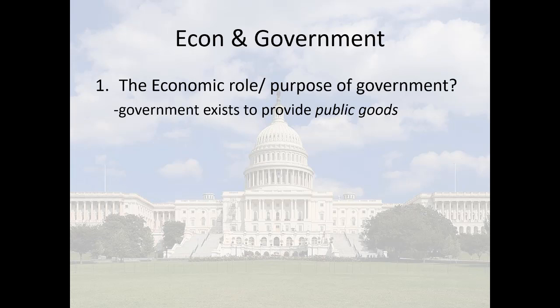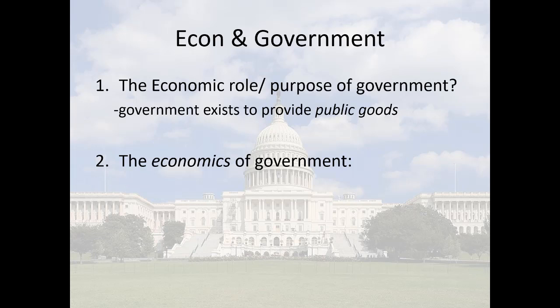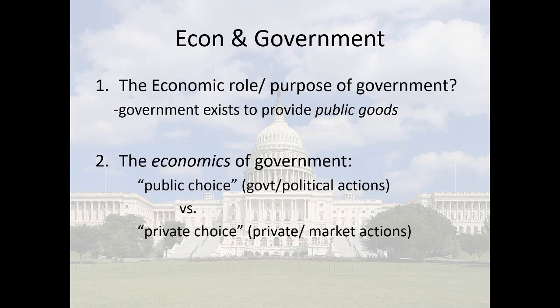We want private goods to be produced by entrepreneurs in the market economy because the incentives are such that competitive market processes lead to low prices, large consumer surplus, and ongoing innovation with respect to new products, improved products, enhanced quality, and cost reduction. So the market process with competition and entrepreneurship, innovation, the incentives and information that prices provide, works very well for the production and distribution of private goods. But with public goods, it doesn't work so well, so we want government to provide public goods. And then we talk about the economics of government, which we'll analyze over the next few lectures.